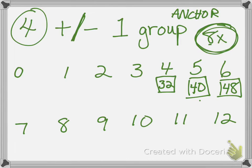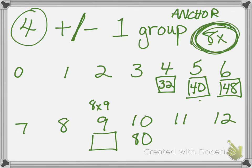Everybody knows what eight times ten is — 80. Let's use that to figure out a hard one: eight times nine. We're talking about eights, so let's subtract a group of eight. 80 take away eight is 72. And adding a group of eight to 80 is really easy — 88.